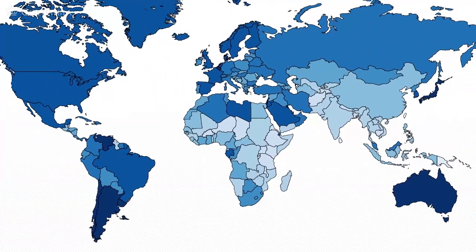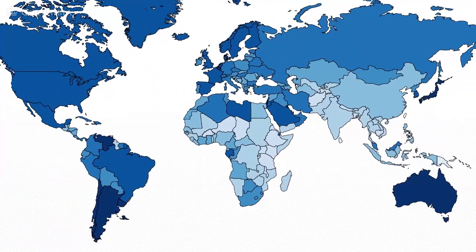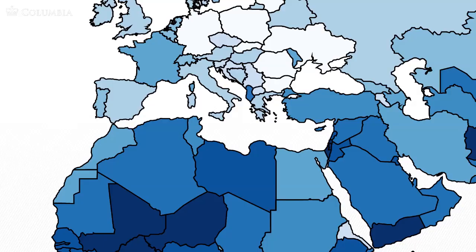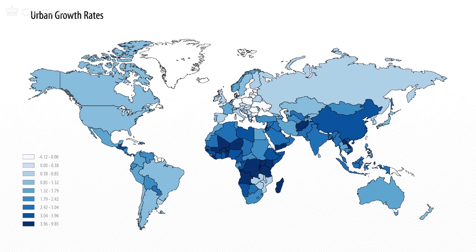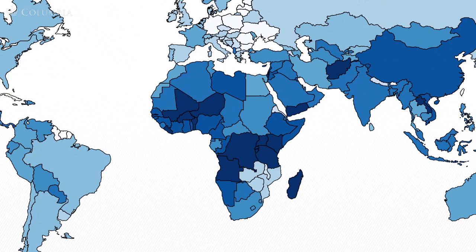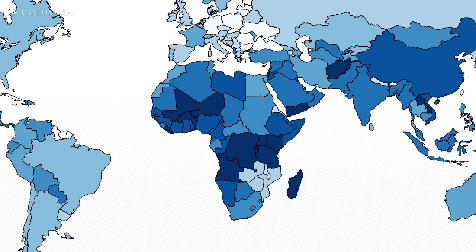One thing that is certain is that everywhere in the world, urbanization is proceeding rapidly as part of the economic development process. Looking at the growth rates of urban areas, it is actually in Africa where urbanization rates are extraordinarily high — sometimes urban areas growing at 5% per year. Remember the rule of 70: divide 70 by 5%, and that's 14 years for an urban area to double. A city of 1 million growing at 5% per year becomes a city of 2 million in just 14 years — a pretty short period of time.